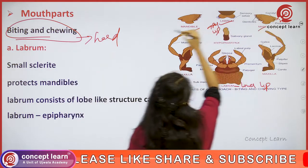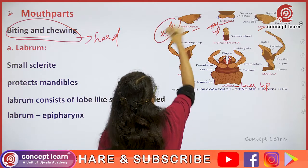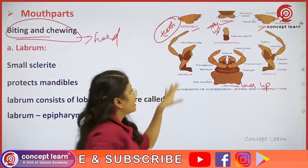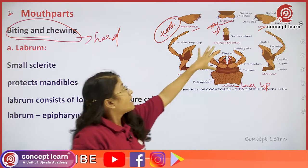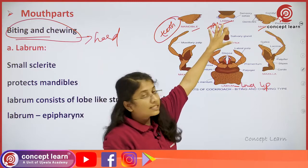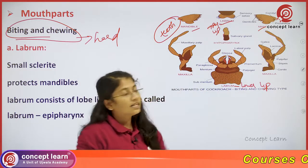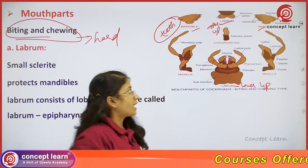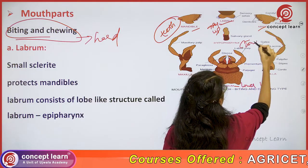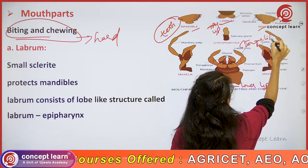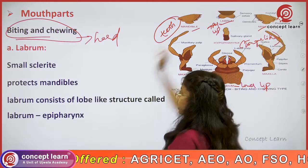These are a pair of mandibles — that is the teeth-like structure — and it will be having a pair of maxillae. In between the labrum and the labium, we will be having the hypopharynx, which acts as a tongue-like structure found between the labrum and the labium.